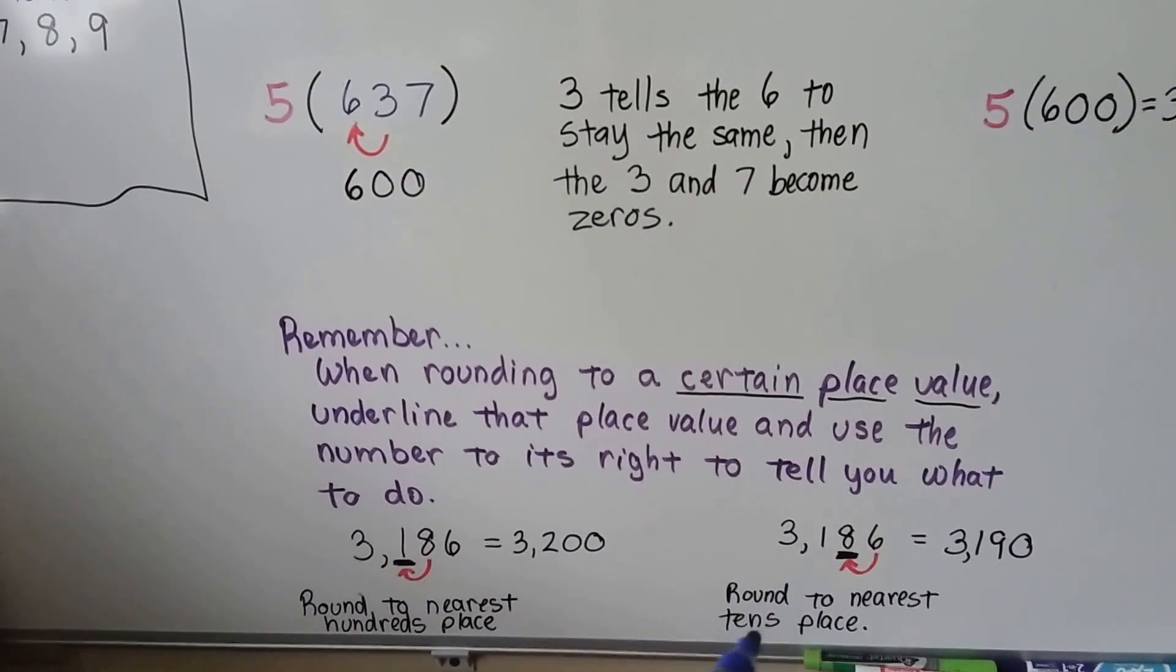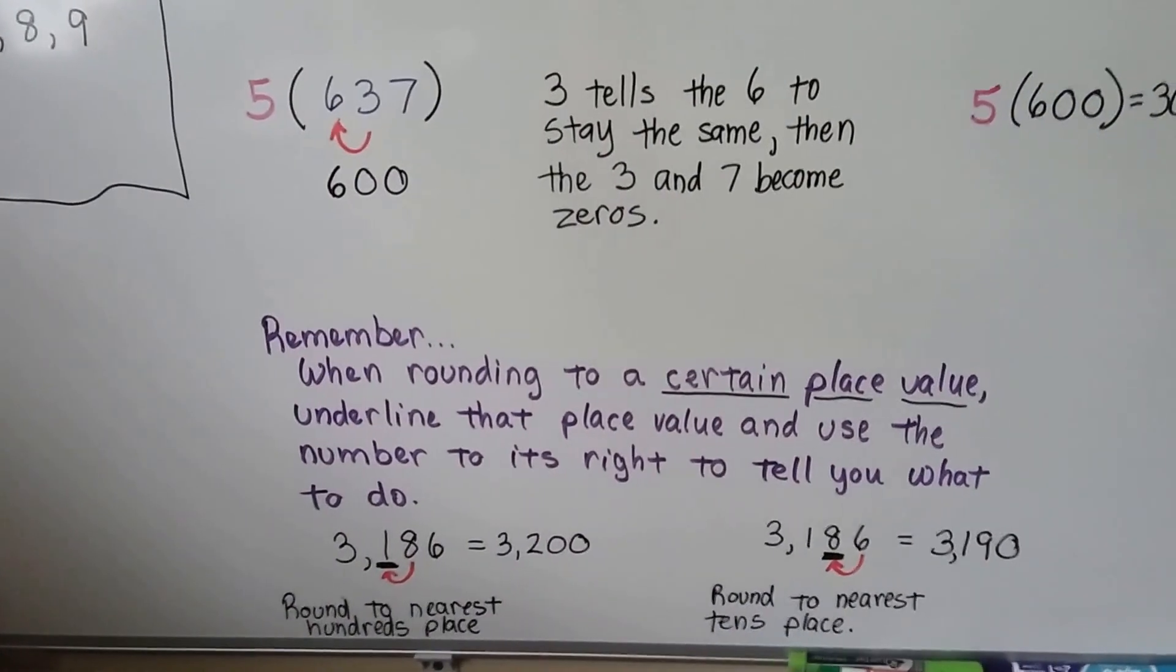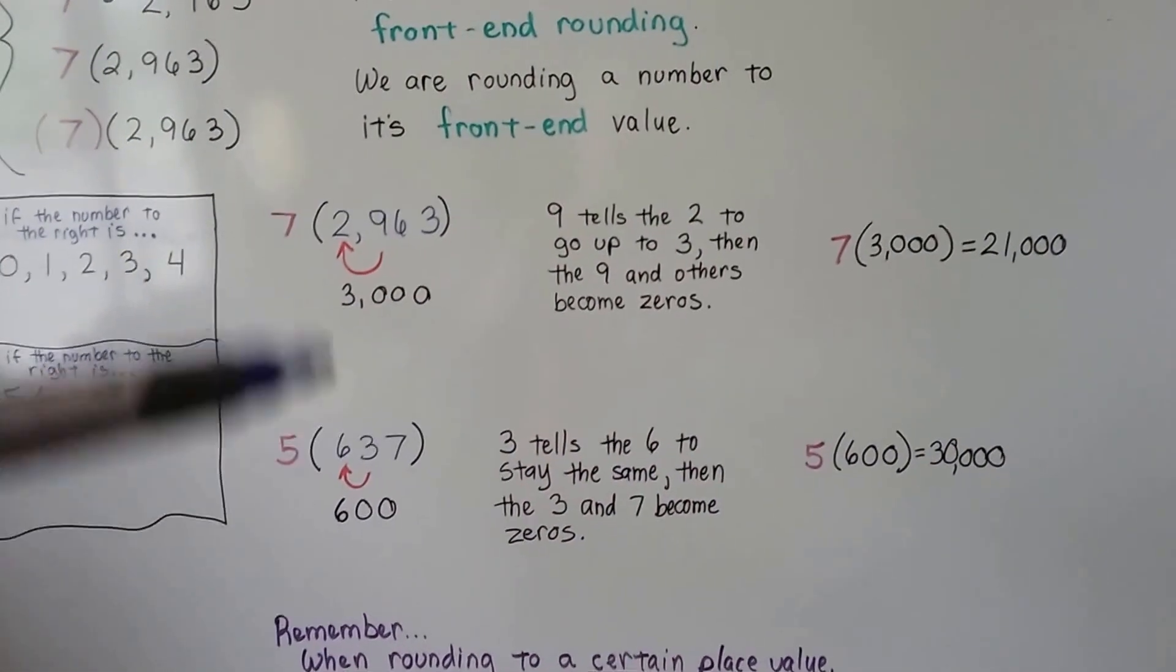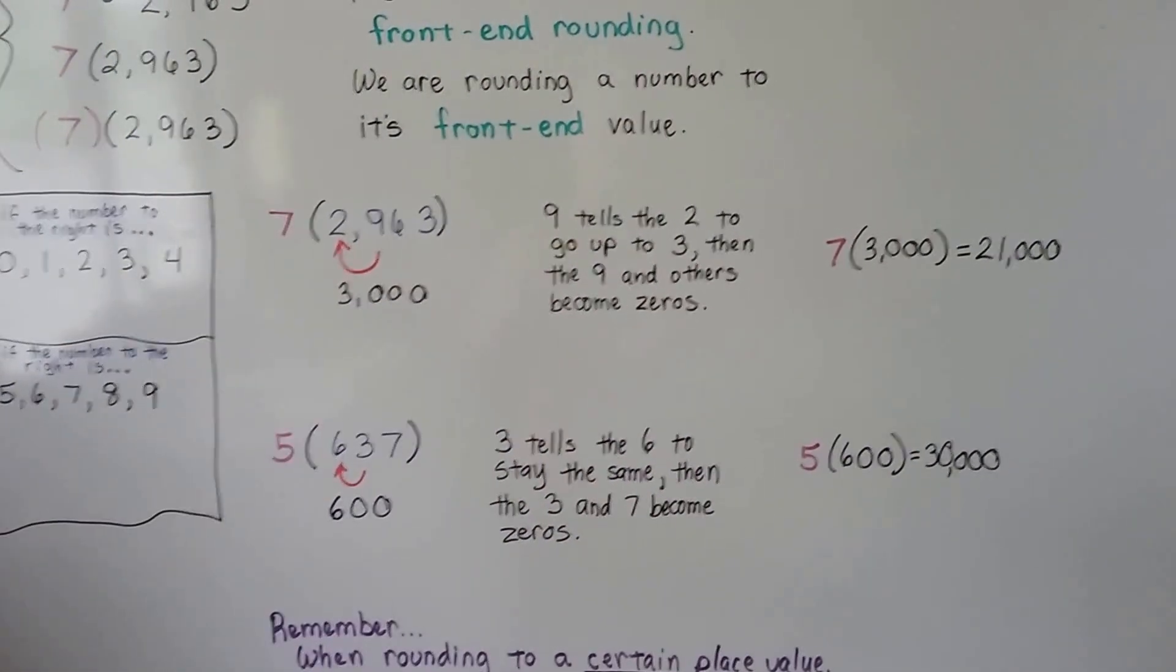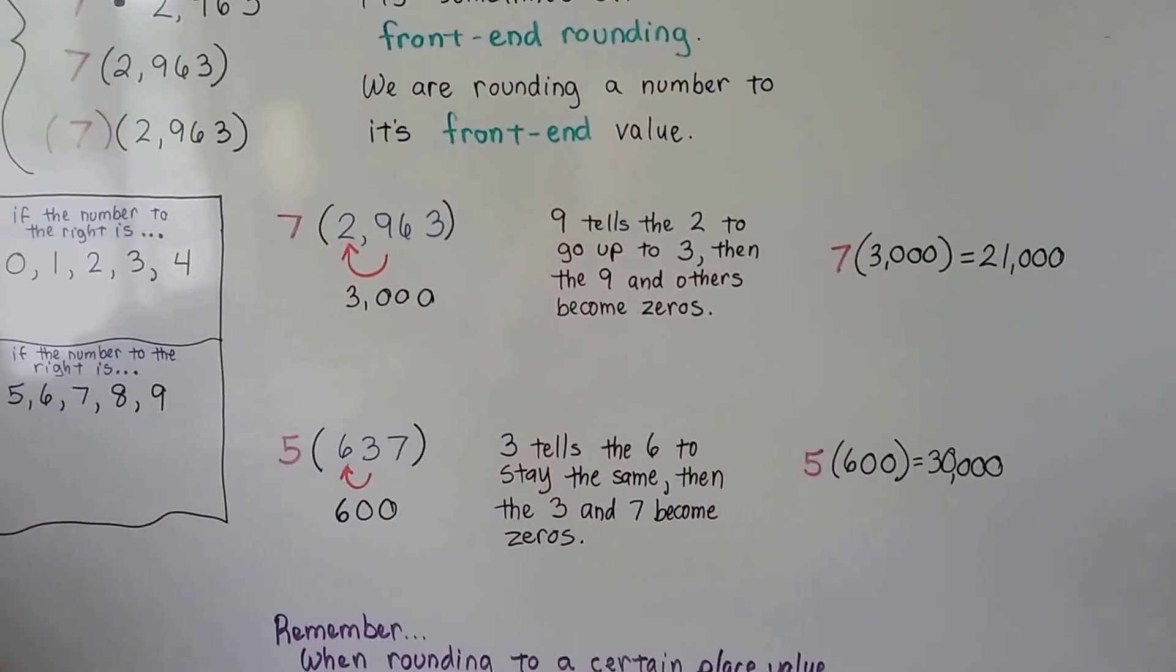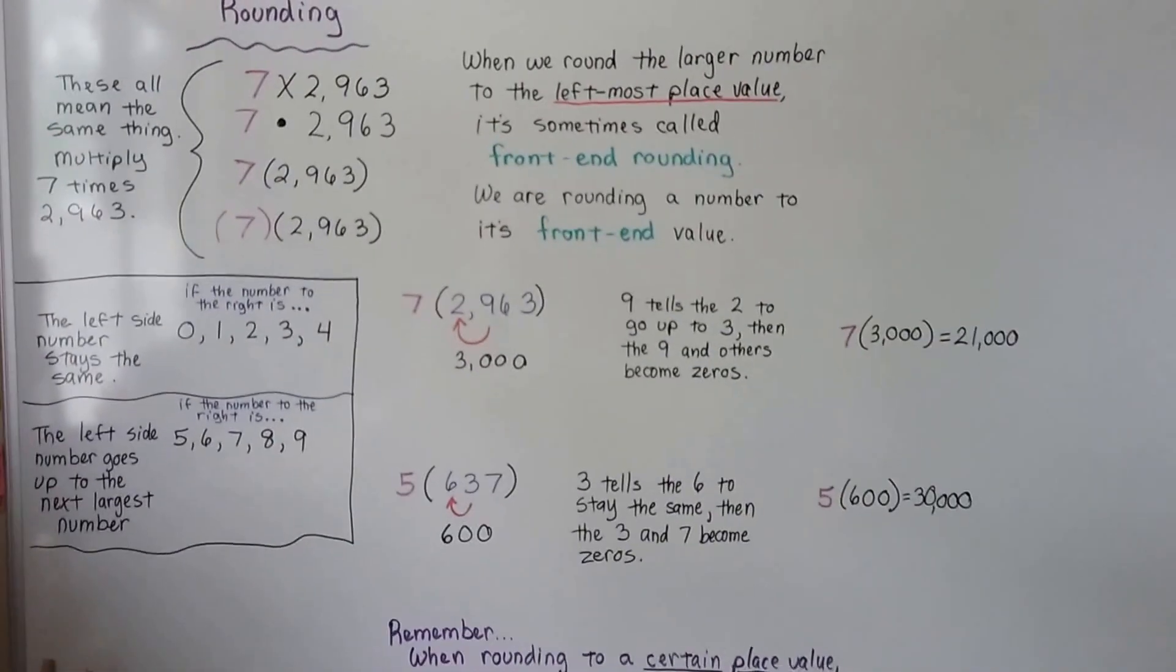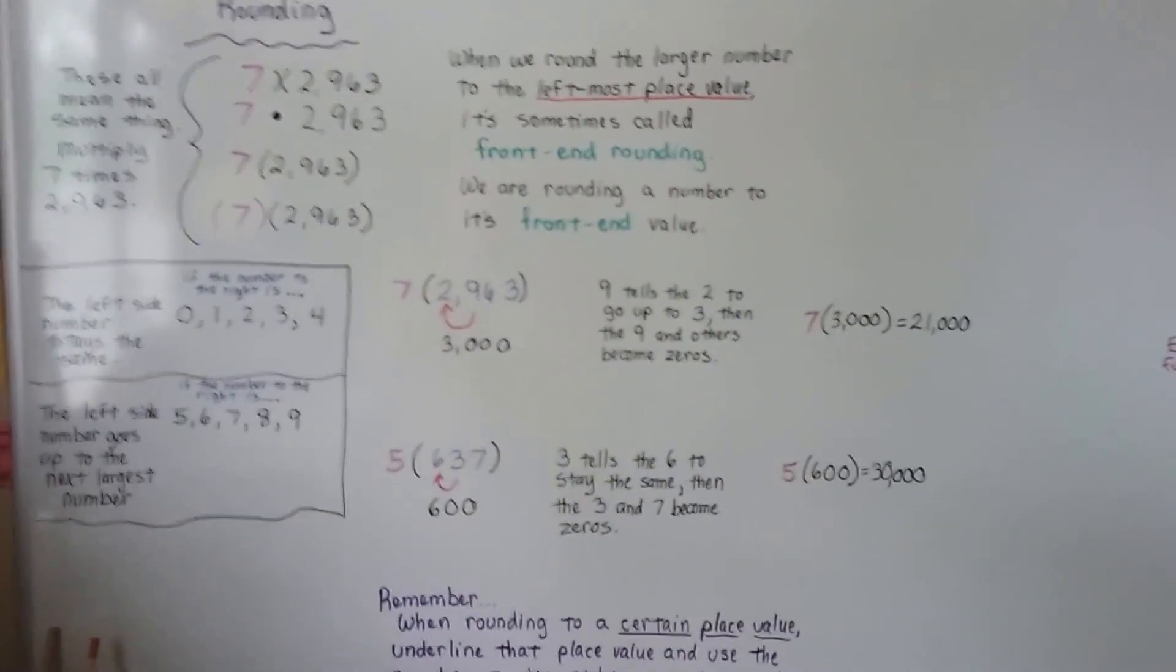So underlining the place value that you're rounding will really help you. But for front-end rounding, it's always that first digit on the left and then the one to the right of it tells us what to do. So that's multiplying with front-end rounding. It's great for estimating and approximating a value.